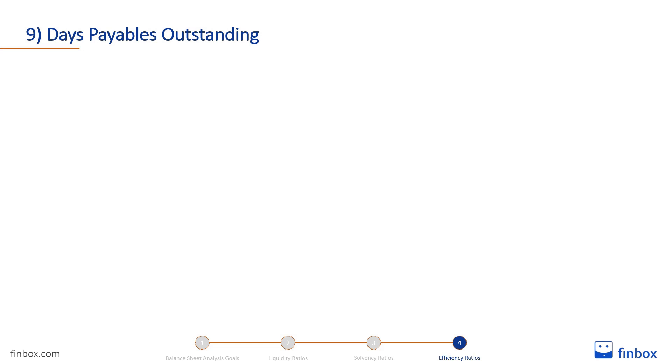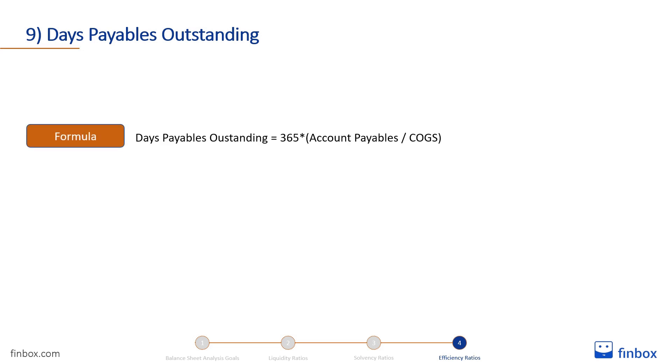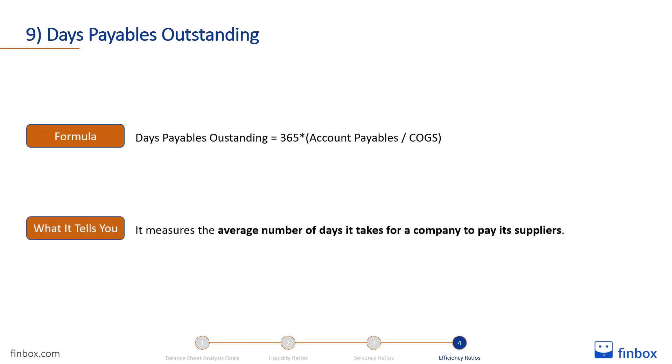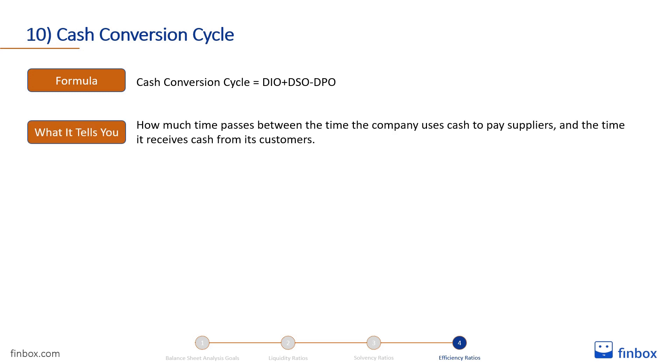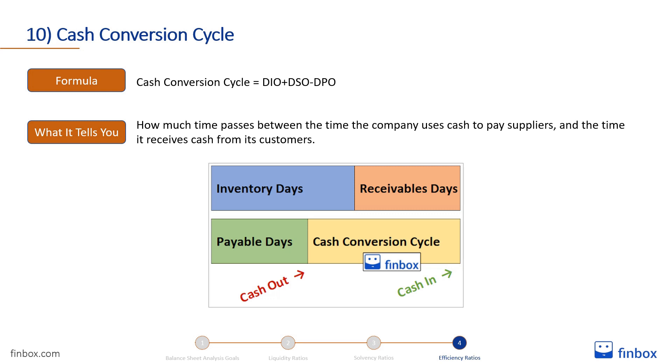Days payables outstanding is equal to the number of days in a year multiplied by account payables divided by the cost of goods sold. It measures the average number of days it takes for a company to pay its suppliers. In this case it is the opposite — a higher ratio gives the company much more flexibility in managing the business, though a too-high ratio could be a warning sign that the company has some difficulty paying its suppliers. The cash conversion cycle is equal to DIO plus DSO minus DPO. It tells you how much time passes between when the company uses cash to pay suppliers and when it receives cash from customers. A lower cash conversion cycle is better, since it means the company is collecting cash quickly and has more flexibility in paying its suppliers.